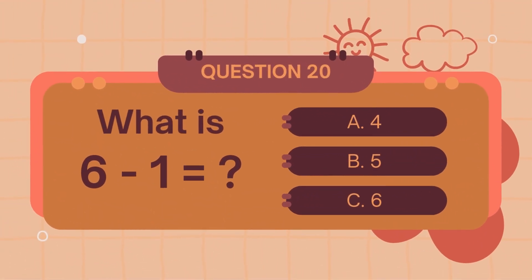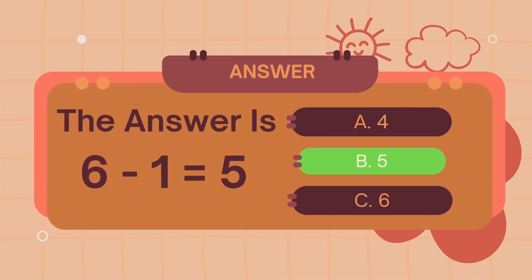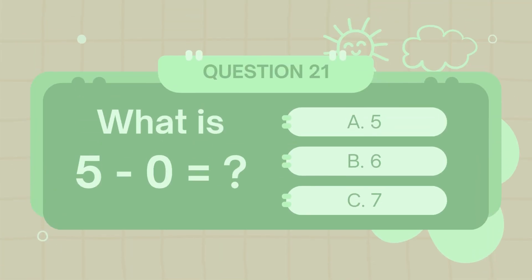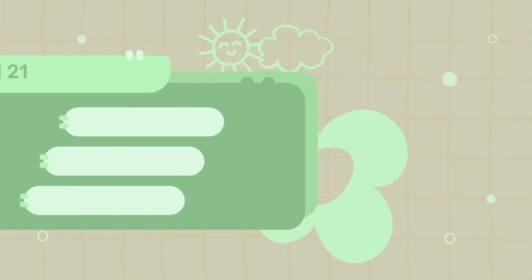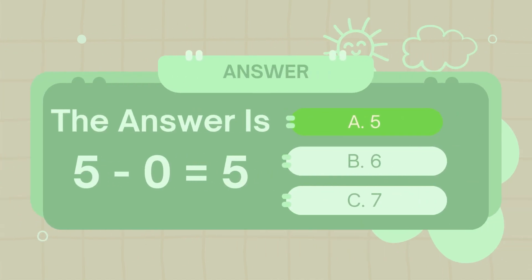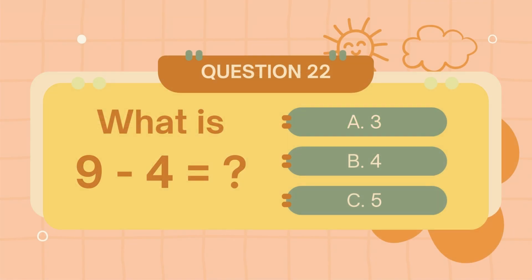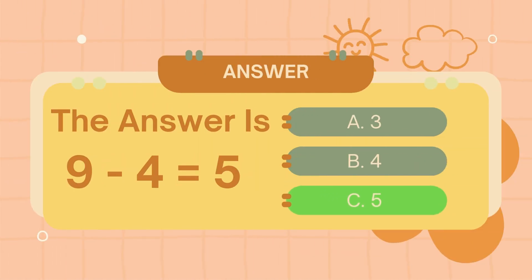What is 6 minus 1? The answer is 5. What is 5 minus 0? The answer is 5. What is 9 minus 4? The answer is 5.